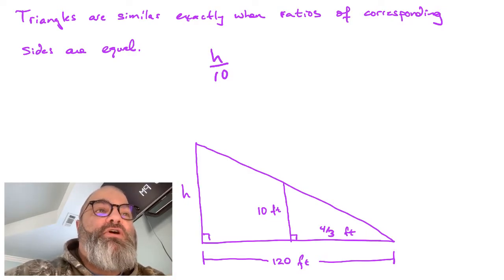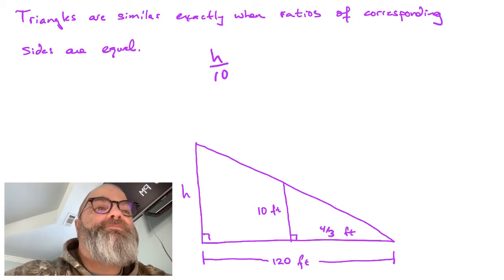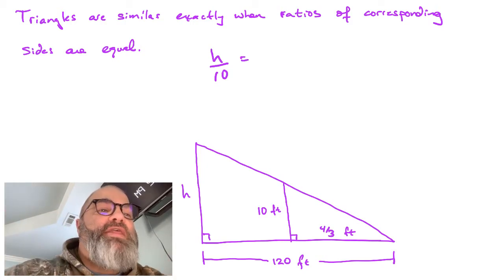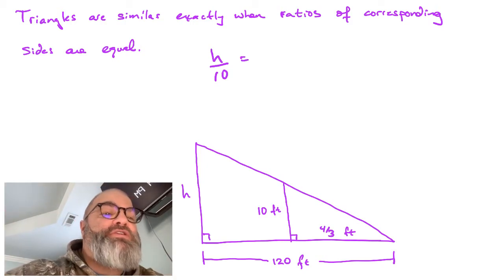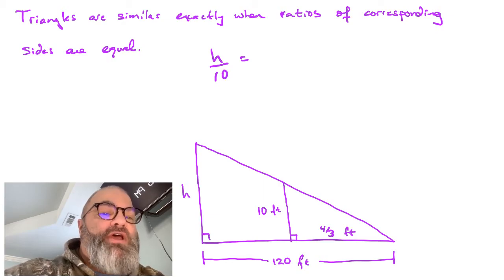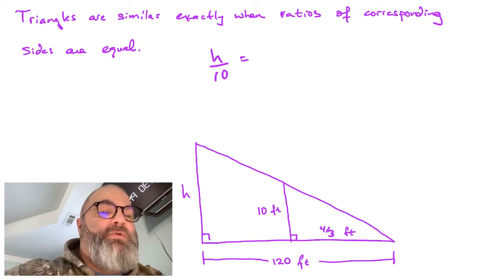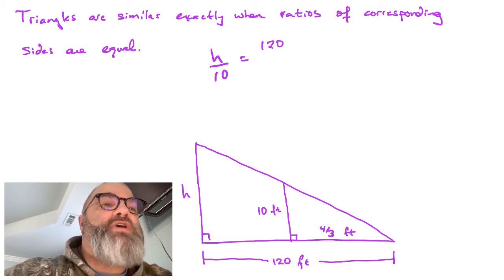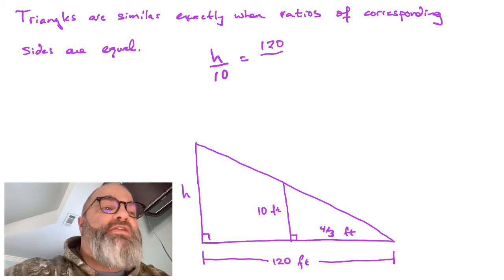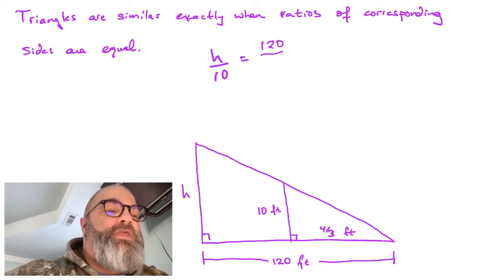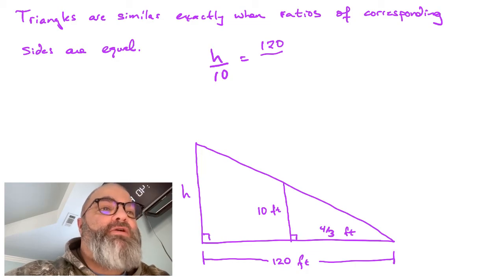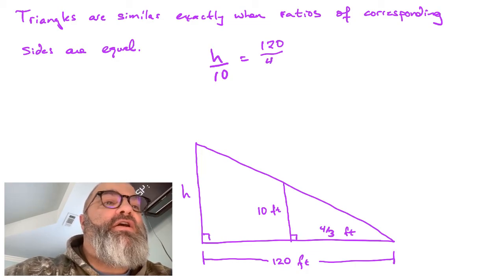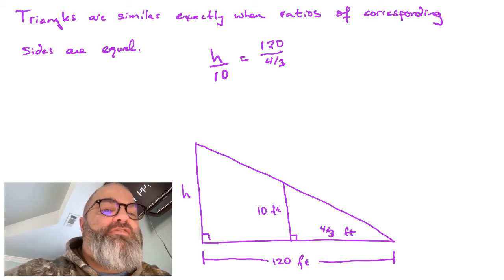To say that those are going to be equal means that if we look at another ratio of corresponding sides, now if we look at the ratio of the horizontal sides, the ratio of the big triangle to the small triangle, we've got 120 divided by, and then the small triangle has a horizontal side of 4 thirds feet.